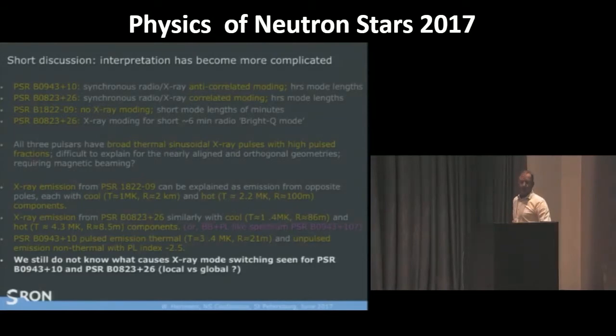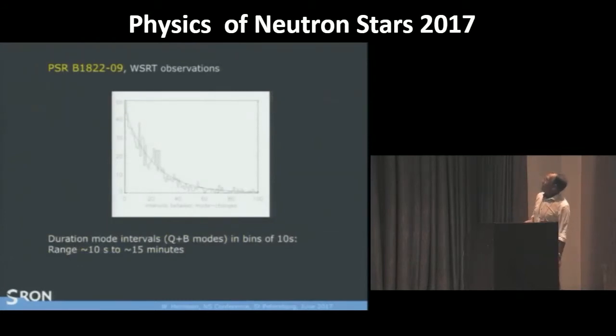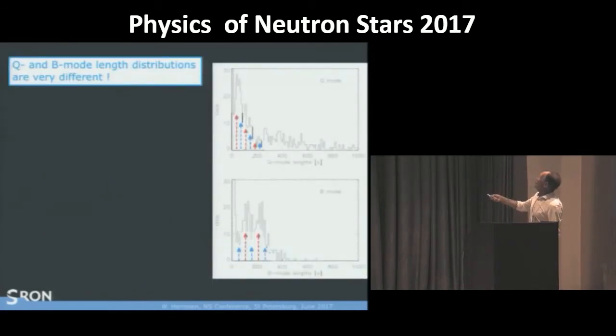I have two more slides if you allow me. I found this also very exciting and would just like to show you this. PSR 1822, our Westerbork observations, they have long observations because we need that for the X-rays. And these are the mode length intervals. And this is a continuous distribution from 10 seconds to 15 minutes. And you see that most modes have a duration of 4-5 minutes and a short tail to 15 minutes. So that's very smooth and this is summing up all modes. If I now make two distributions, one for the Q mode and one for the B mode, they are not the same at all. They add up to something very smooth and these are completely different. And it looks like you have maximum and some valleys.